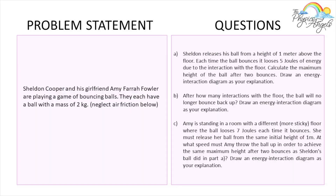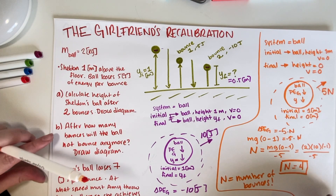Alright, so 4 bounces. Now let's go ahead and read part C. Part C says: Amy is standing in a room with a more sticky floor where the ball loses 7 joules each time it bounces. She must release her ball from the same initial height of 1 meter. At what speed must Amy throw the ball up in order to achieve the same maximum height after 2 bounces as Sheldon's ball did in part A? Draw an energy interaction diagram as your explanation.